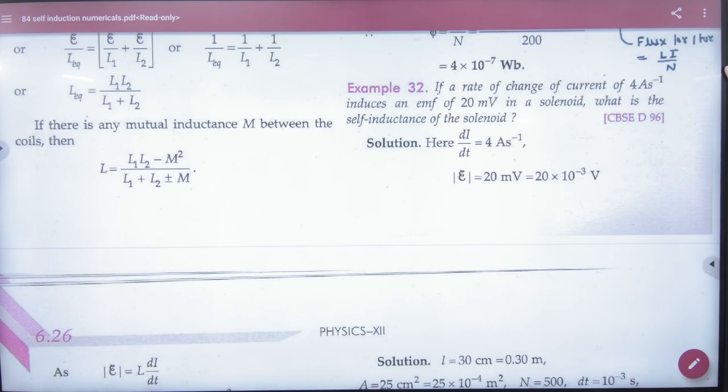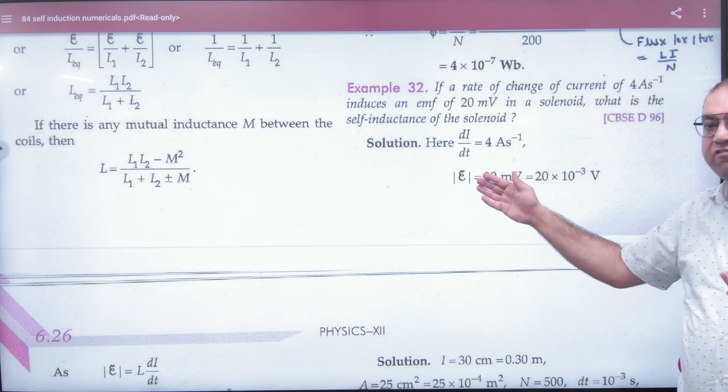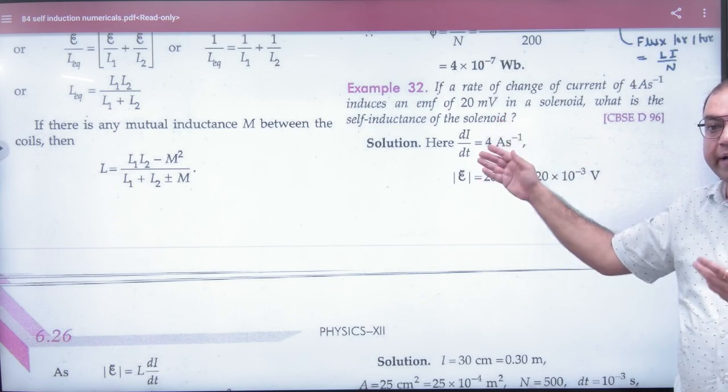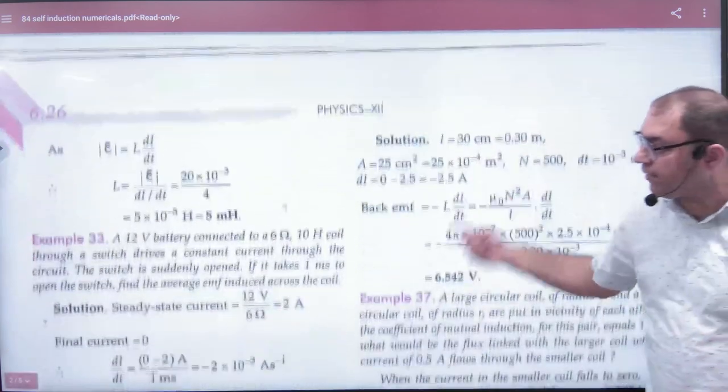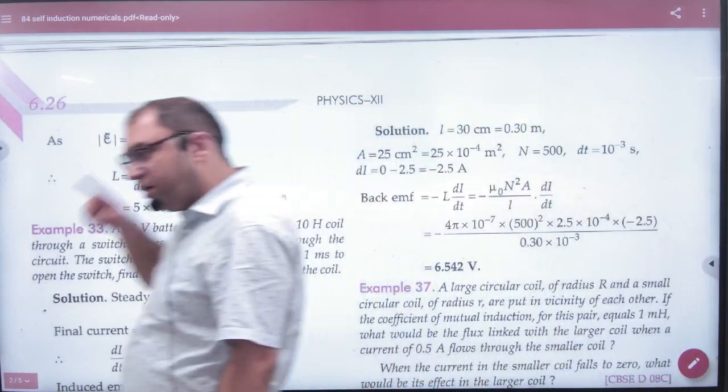Example 32: If the rate of change of current is 4 ampere per second, so di/dt is given, induces an EMF. What is the self-inductance? You know this formula: E = L di/dt. It is minus but we can ignore the negative sign. So L = E/(di/dt). EMF known, di/dt known, answer is henry.